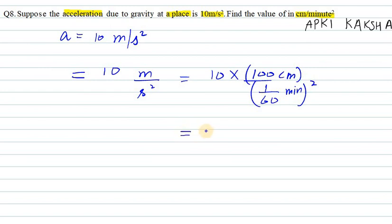Now this will be 100, 10 we have and 100 here so 1000. And this 60 square will come over to numerator part, so it will be 3600.